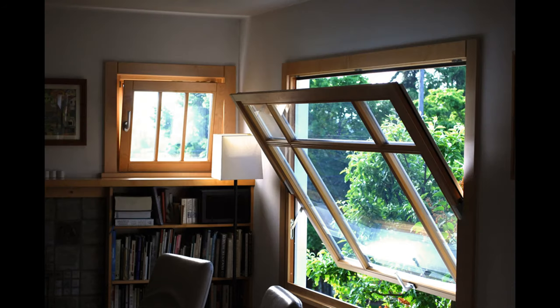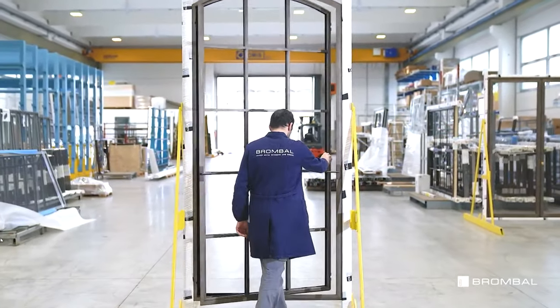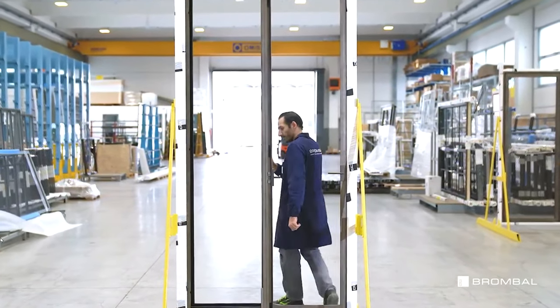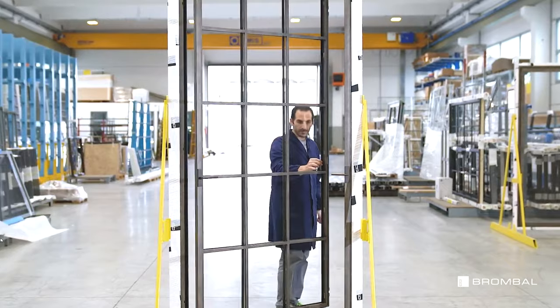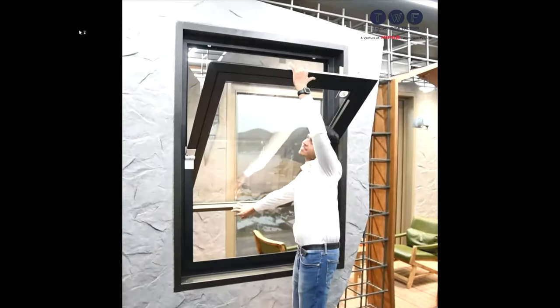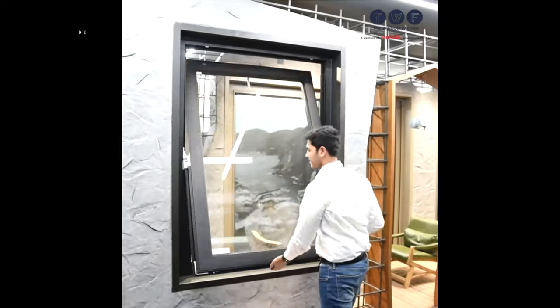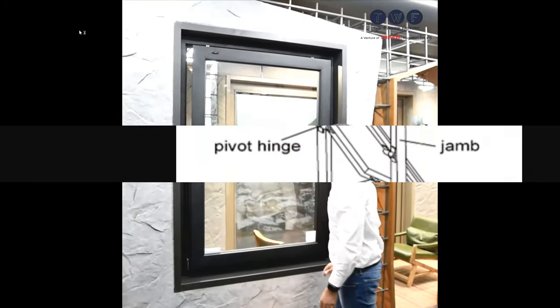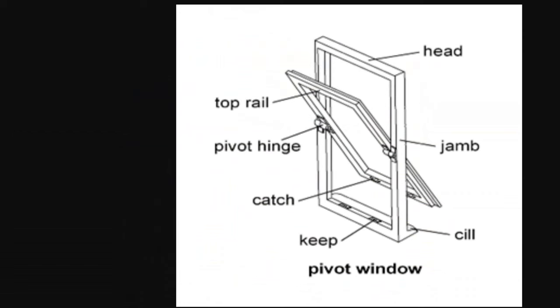Pivot windows can be a little pricey. If they are horizontally hung they can be very pricey, because the entire weight of the window — especially a double or triple-paned window — will be on those two small pivots at the side. These windows also tend to have very thick window frames because of the way they work. However, a properly designed pivot window is extremely easy to open and close because they are balanced, requiring minimal effort to flip the window sideways.